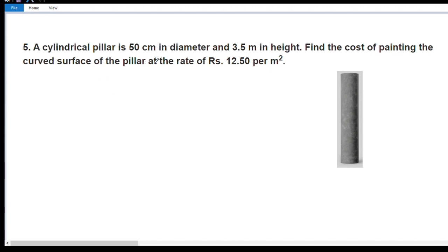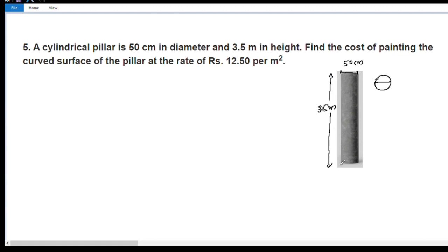A cylindrical pillar is 50 cm in diameter and 3.5 meters in height. A cylindrical pillar has its base 40 cm in diameter.